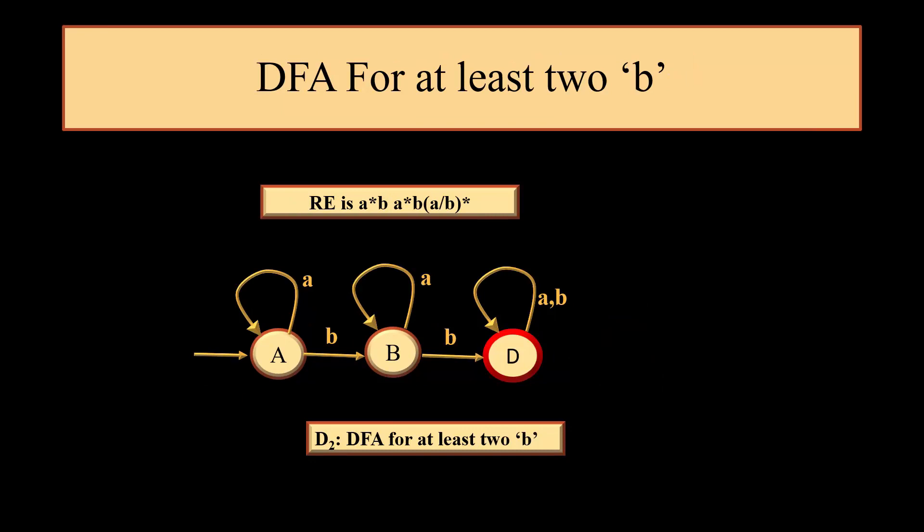Next we move to DFA for at least 2b. The concept remains the same. Here we have restriction on b and no restriction on a, so it will be a star b a star b (a or b) star. The DFA which has been designed for this is named as D2.